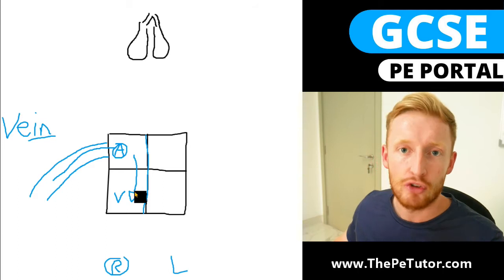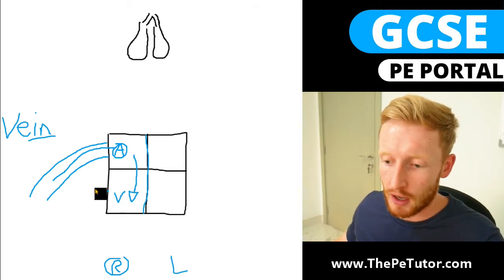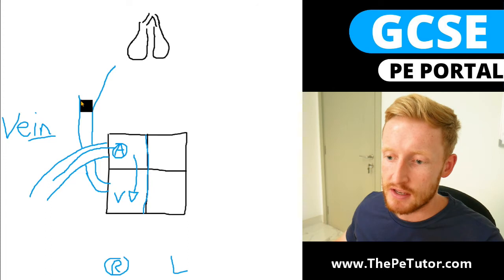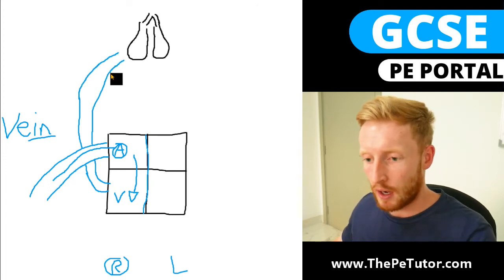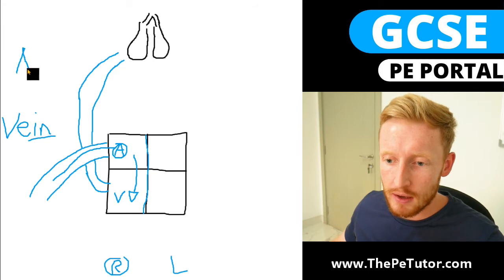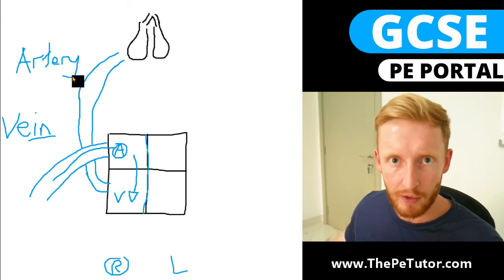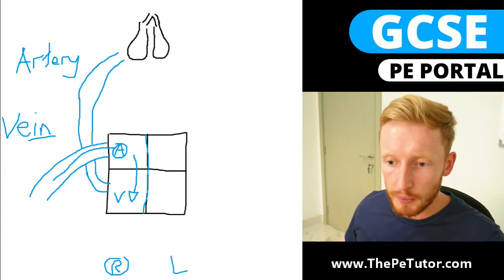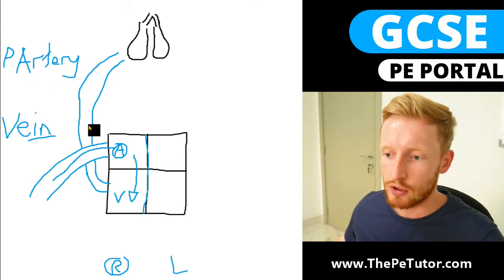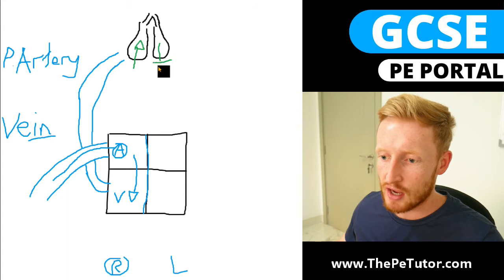Once blood is in the right ventricle, we know we have to pump it up to the lungs — to receive oxygen and drop off carbon dioxide. The blood leaves the heart, coming up out of the right ventricle to visit the lungs. The blood vessel taking it away from the heart is an artery — 'away' means artery. It makes up the pulmonary circuit, 'pulmonary' relating to breathing and respiratory function, so it's the pulmonary artery. The pulmonary artery takes deoxygenated blood from the right ventricle up into the lungs.